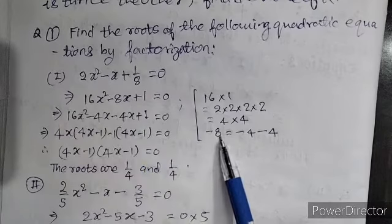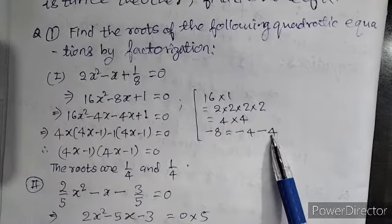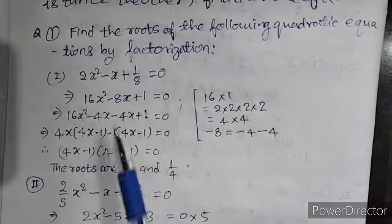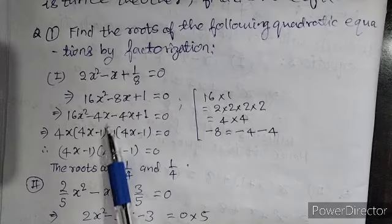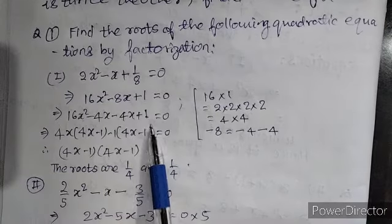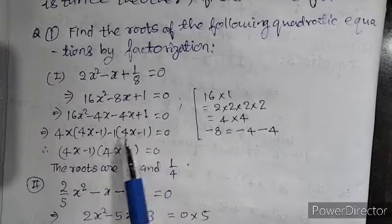So, minus 8 may be written as minus 4 minus 4. Therefore, you will get 16x square minus 4x minus 4x plus 1 equal to 0. Or,